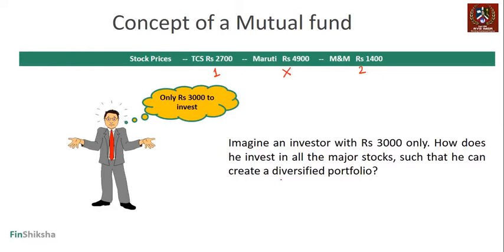That's a big issue because this person, even though aware that a diversified portfolio is good, cannot create one with such a small amount of money. There are two options. Option one is to wait until 3,000 grows to something like 3 lakhs and then invest. That's not a great idea because you are delaying investments for an individual, and that's always not advisable.